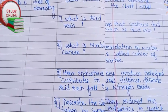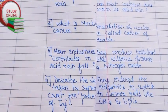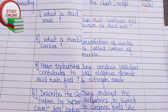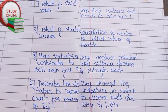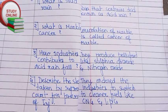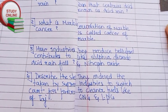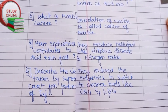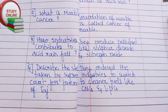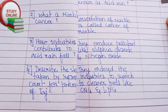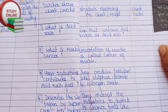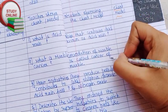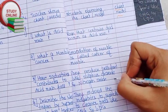For recapitulation, I have added four questions: what is acid rain, what is marble cancer, how do industries contribute to acid rain, and describe the steps taken by the Supreme Court for prevention of the Taj Mahal. Here are the expected answers.